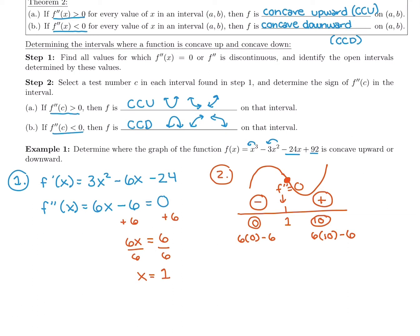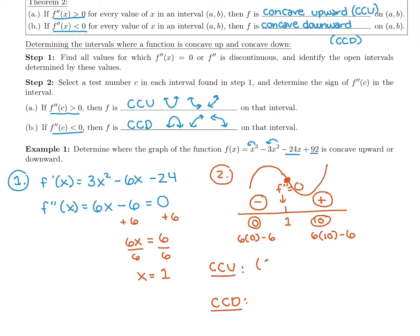So our conclusion: the function is concave up on the interval (1, ∞) because the second derivative is positive there. The function is concave down on the interval (-∞, 1) because the second derivative is negative there. Remember, the endpoints use x = 1, not the random test values like 0 or 10.